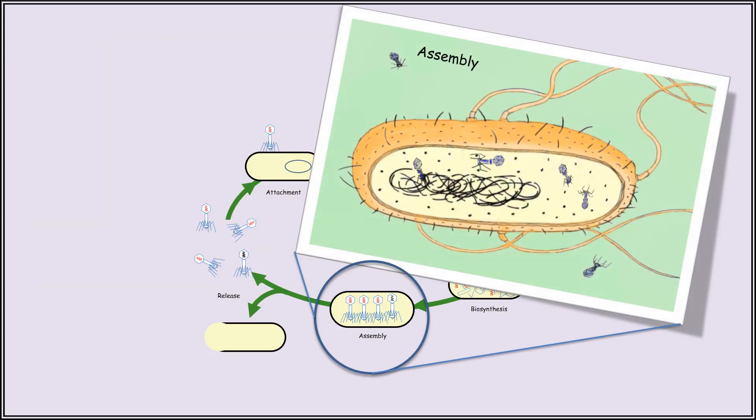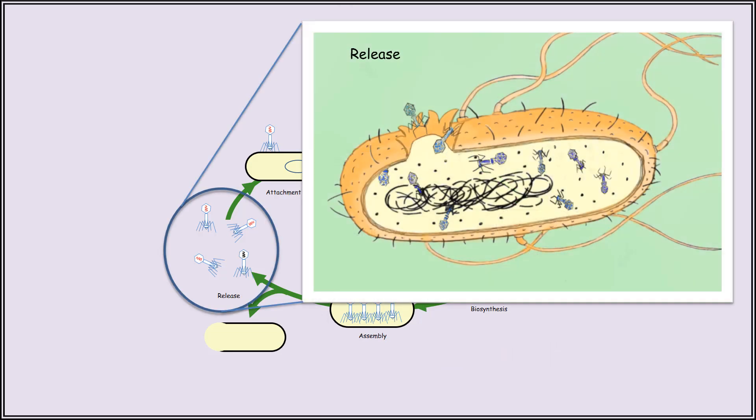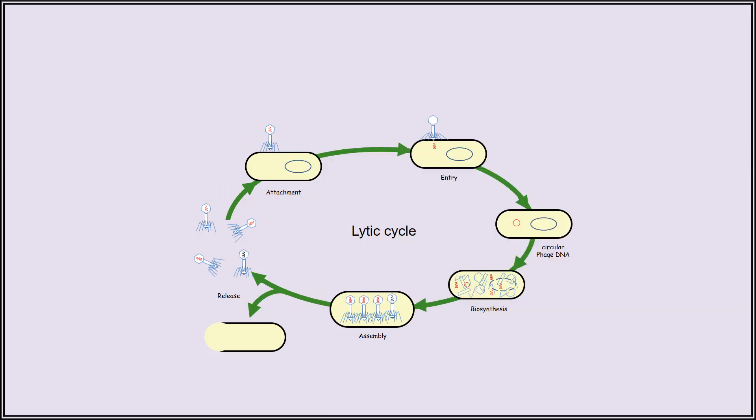These components are then self-assembled in what's known as the assembly step inside the cytoplasm. This process can generate anywhere between 50 to 200 new bacteriophage particles. At one point, the bacterial cell becomes so weak that it will erupt, releasing the newly formed particles, and the cycle continues when these new particles attach to their next bacterial hosts. What I've just described is the lytic cycle of bacteriophage.